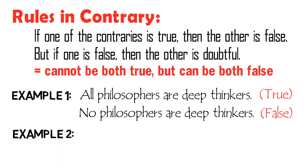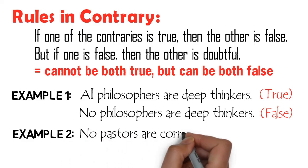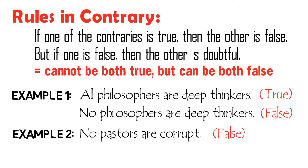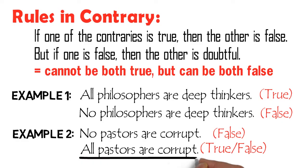However, if we assume that the proposition, no pastors are corrupt, is false, then we cannot absolutely say that its contrary, all pastors are corrupt, is true. For sure, it's possible for the contrary to be either true or false. Again, since we cannot have an absolute truth value to the contrary of the proposition, no pastors are corrupt, then its truth value is doubtful.